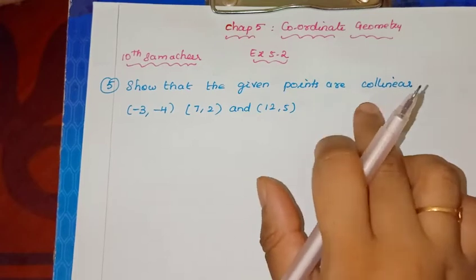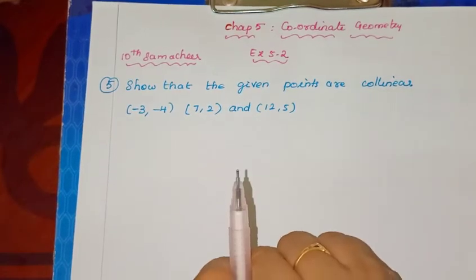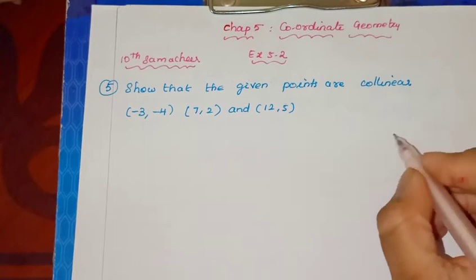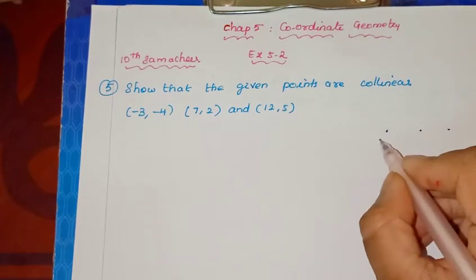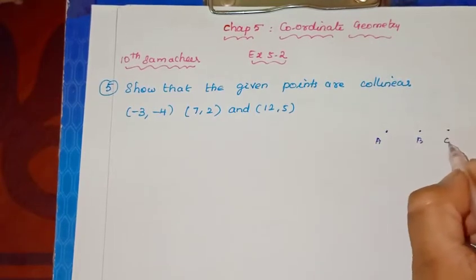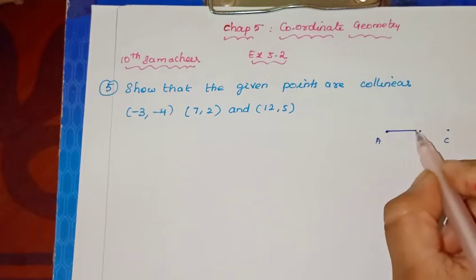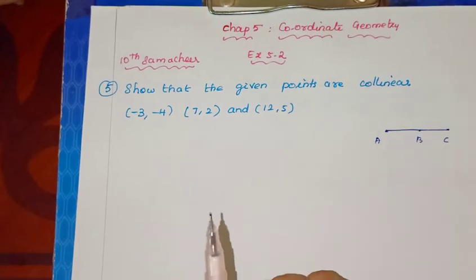The question is: show that the given points are collinear. Three points are collinear. So what is collinear? If we have 3 points A, B, C, that is, we have a straight line, that's collinear.